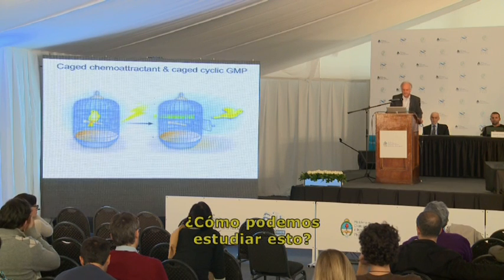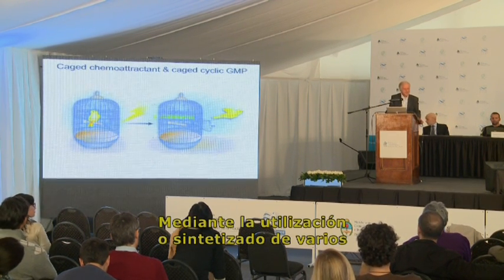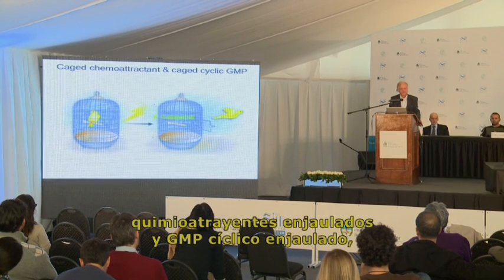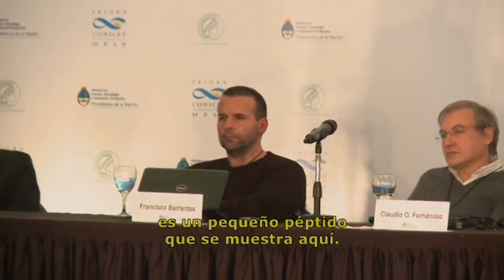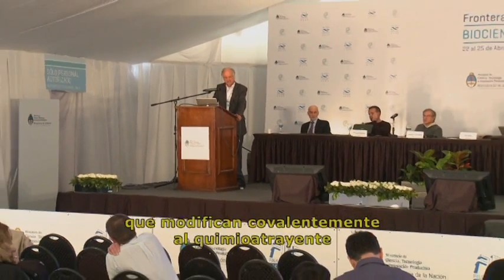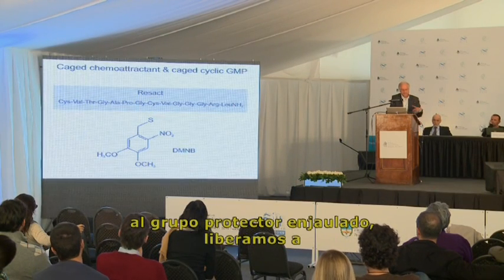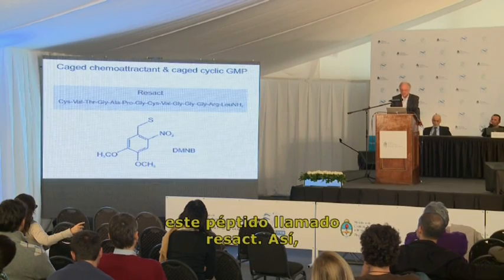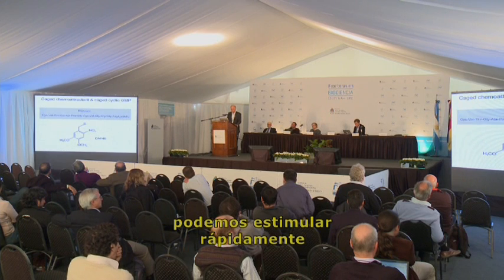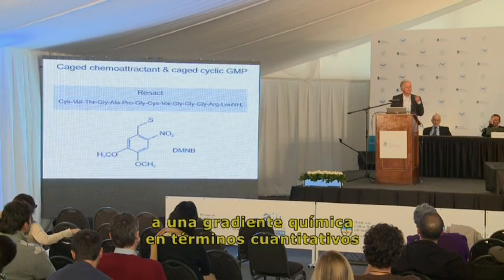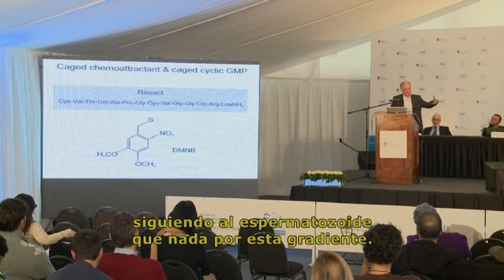We study this by synthesizing various chemicals. For example, we synthesized caged chemotractants and caged cyclic GMP, which is an intracellular messenger. The chemotractant for sea urchin sperm is a small peptide of 14 amino acids, and we covalently modify it so that it is not recognized by the sperm. Then, with a flash of light, we release the protecting caging group — releasing the peptide called resact — and thereby rapidly stimulate the sperm. We can also sculpt a chemical gradient in quantitative terms within milliseconds, and follow sperm swimming in this gradient.